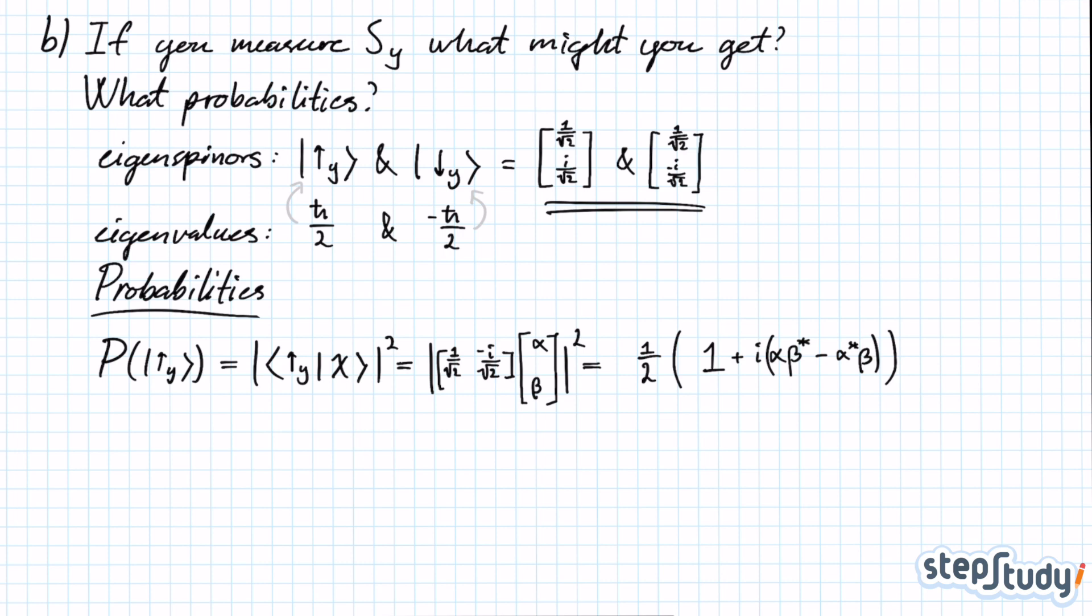Once you've done that, you have the probability of finding spin up in the y-direction. We'll move on to finding the probability of finding the spin state to be spin down in the y-direction.